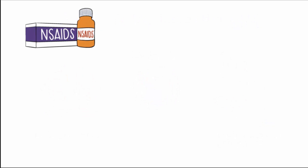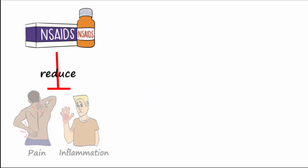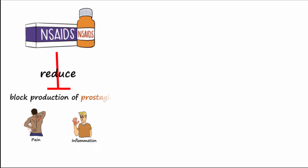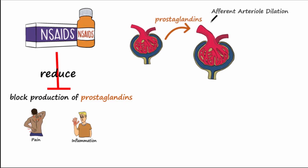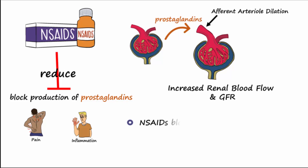NSAIDs can be very helpful to reduce pain and inflammation. They do this by blocking the production of prostaglandins. But prostaglandins also act to dilate the afferent arterioles in the kidney. This dilation allows more blood to flow to the kidney and to increase glomerular filtration rate, or GFR. Since NSAIDs block prostaglandins, they can cause a reduction of renal blood flow.